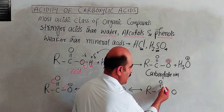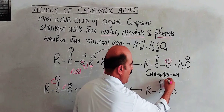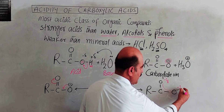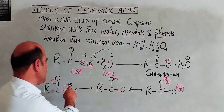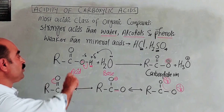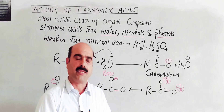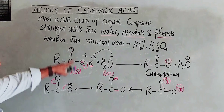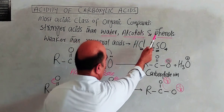The negative charge is spread equally over both oxygen atoms, meaning localization of the negative charge is not possible — it is delocalized. This makes it easy to release a proton, meaning carboxylic acid ionizes readily and is therefore a stronger acid than water, alcohol, and phenol.